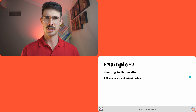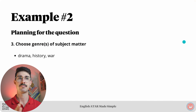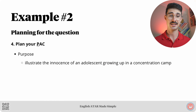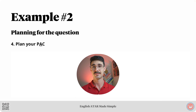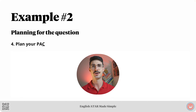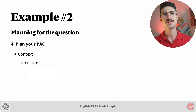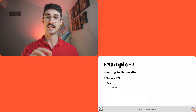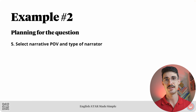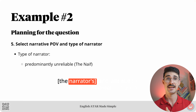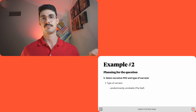Step three: I've chosen drama, history, and war as my genres of subject matter. Step four, plan your PAC. The purpose of my text is to illustrate the innocence of an adolescent growing up in a concentration camp. My audience is young adults or older. For cultural context, only cultural context applies for an imaginative text — an obvious historical feature is World War II. Step five: the narrative POV will be first person central. The type of narrator will be predominantly unreliable — specifically the naif, ignorant due to innocence and youth.